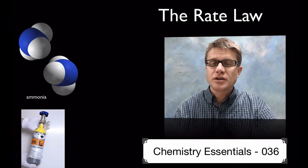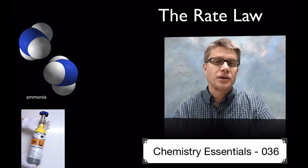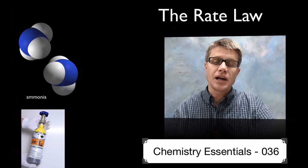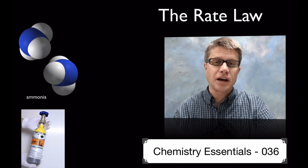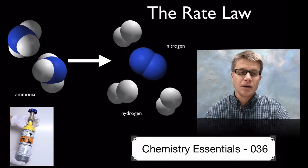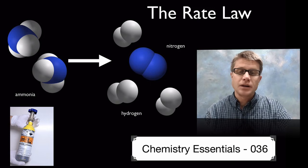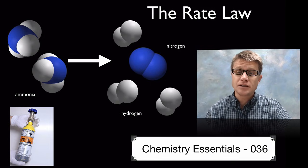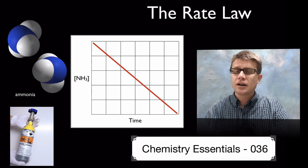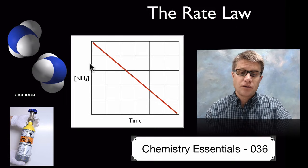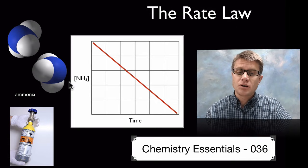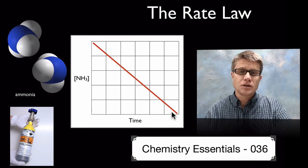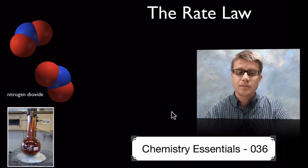Hi, it's Mr. Andersen and this is Chemistry Essentials video 36. It's on the rate law. In the last video we talked about reactions and how the speed of reactions can vary. If we look at the breakdown of ammonia into hydrogen and nitrogen gas, it's going to proceed along a straight line. Whether we have a high or low concentration of ammonia, the amount being consumed remains consistent — the rate of this reaction is the same.